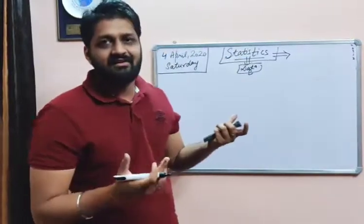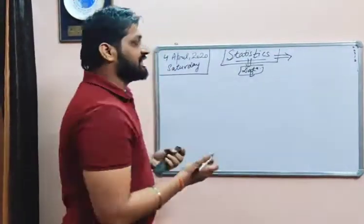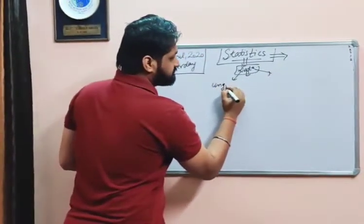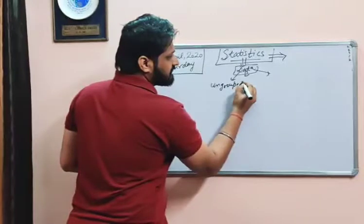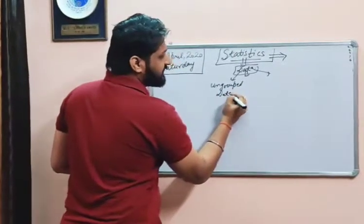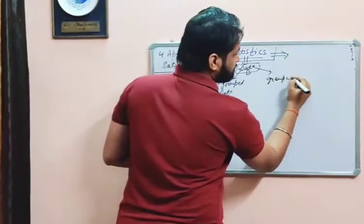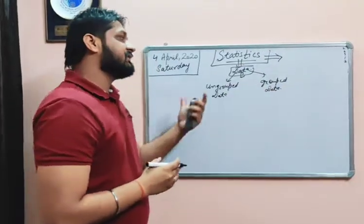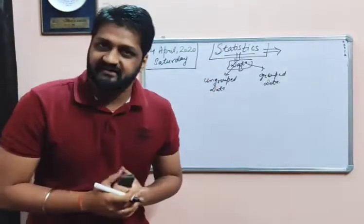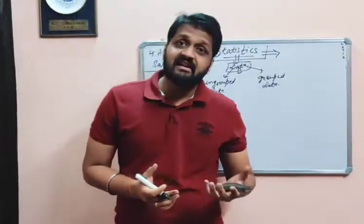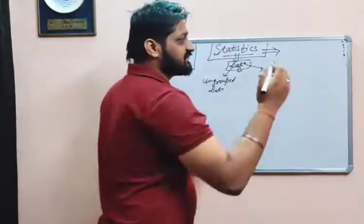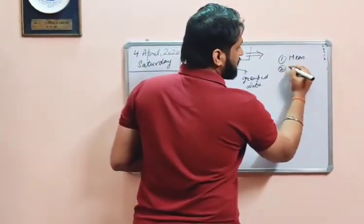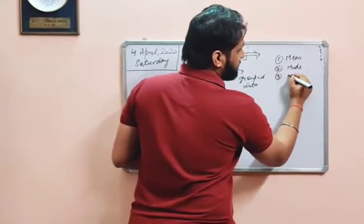So that is basically the general meaning of the term statistics. Now data can be categorized into two parts: first is ungrouped data and second is grouped data. We have to analyze and represent it in order to give the desired results. The three main terms of central tendency in statistics are mean, mode, and median.